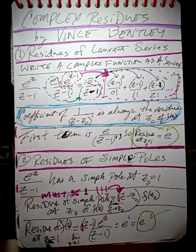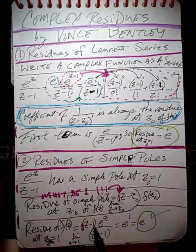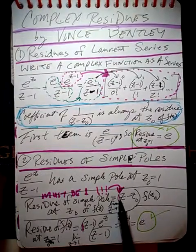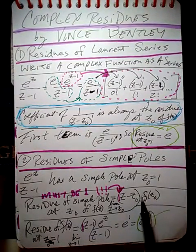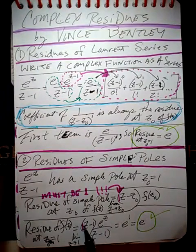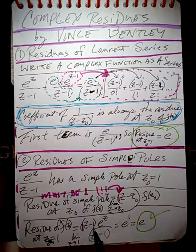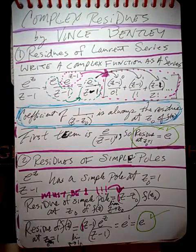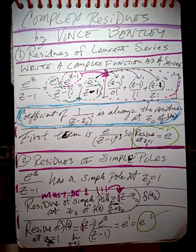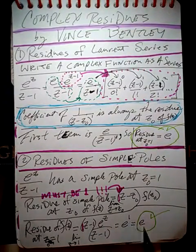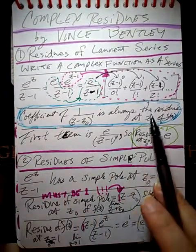What is the residue of the simple pole at z-naught equals one? Well, we'll take this function and multiply it by z minus one. By the way, this coefficient must be one — you cannot have anything but a one for the coefficient when you multiply this times this function. So take this function and multiply it by z minus z-naught, where z-naught is one. Algebraically these two will cancel. Then take the limit as z goes to z-naught, which is one. Stick in one and we'll get e to the one, which is e — which matches the answer we had from the Laurent series method.